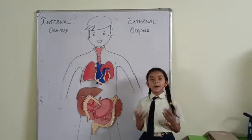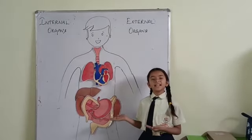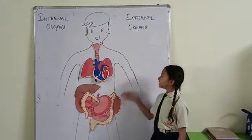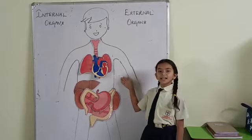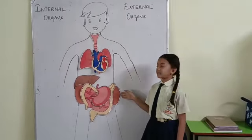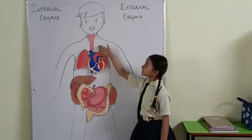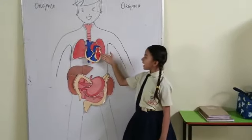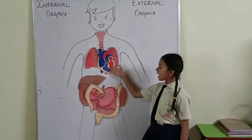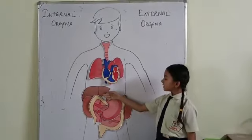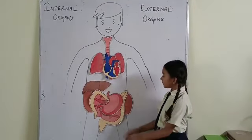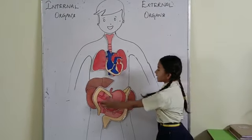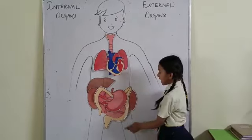Today I will tell you about internal and external organs. These are internal organs. This is lungs and this is heart. This is liver. This is stomach. And these are kidneys.